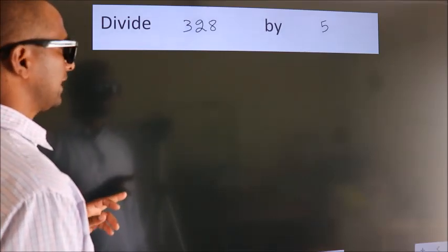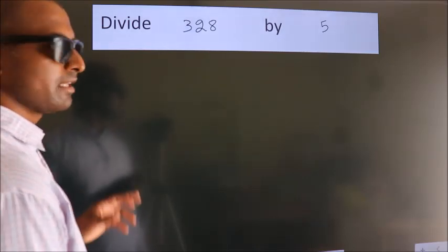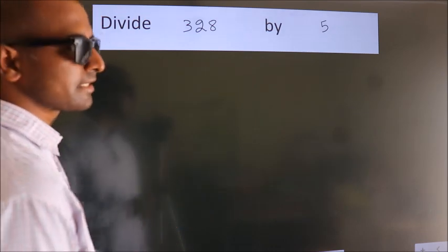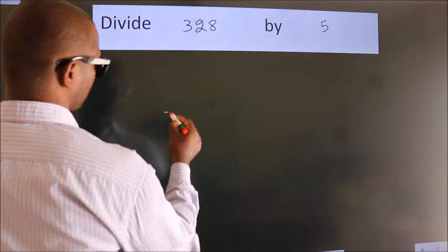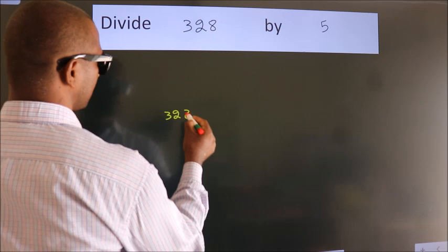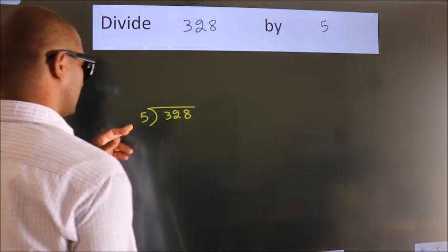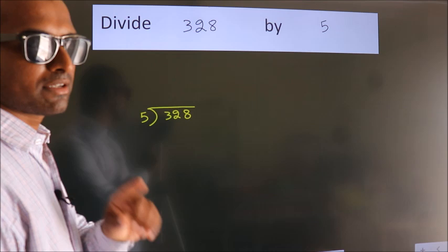Divide 328 by 5. To do this division, we should frame it in this way: 328 here, 5 here. This is your step 1.